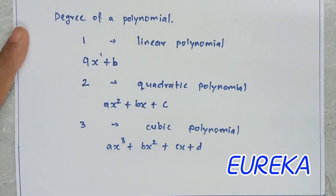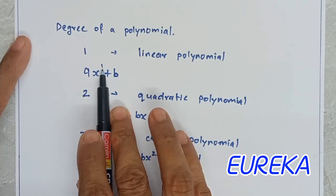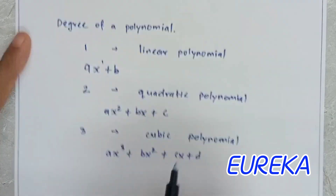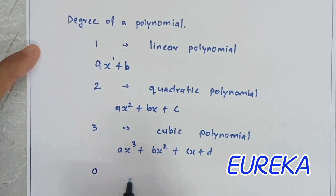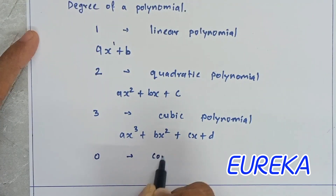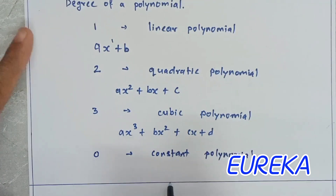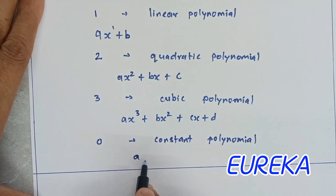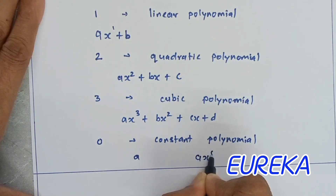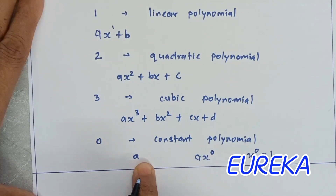Further there are biquadratic and so on. But what if x has no power? If x has no power, it means x has power 0. If the degree is 0, we call such a polynomial a constant polynomial. In that case we write it as just 'a', because x to the power 0 equals 1, so it simplifies to only 'a'. Such a polynomial is called a constant polynomial.